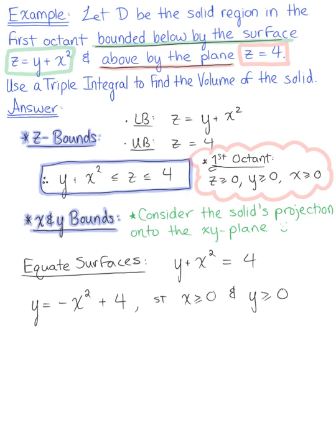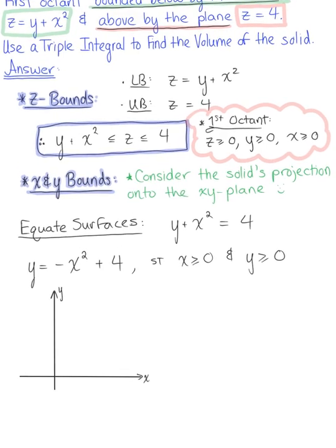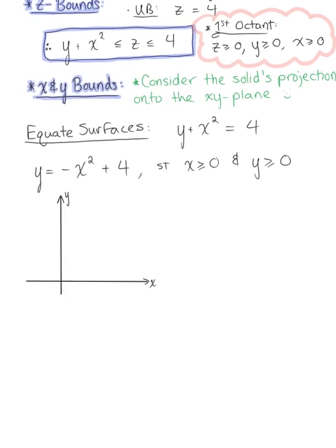Let's think about this graphically. The parabola y equals negative x squared plus 4 is reflected across the x-axis and shifted up 4 units, with vertex at the ordered pair (0, 4). Because this region is restricted to quadrant 1, we have a lower bound at the x-axis where y equals 0, and a bound on the y-axis where x equals 0. The important intersection points are the vertex at (0, 4), the origin, and the x-intercept at the ordered pair (2, 0).